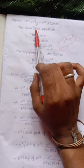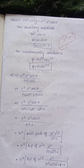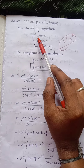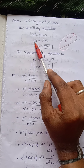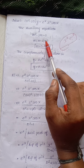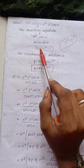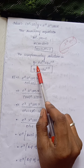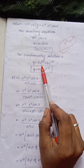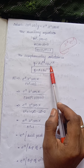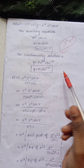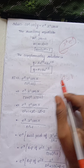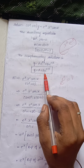We take the auxiliary equation: m squared minus 2m equals 0. Instead of D we put m, so taking m as common we get m(m minus 2) equals 0, giving m equals 0 and m equals 2. So our complementary function is y equals A·e^(0x) plus B·e^(2x), which simplifies to y equals A plus B·e^(2x).